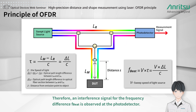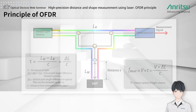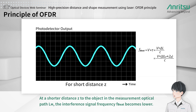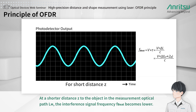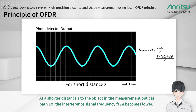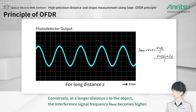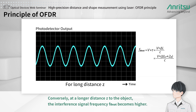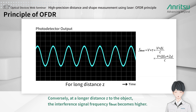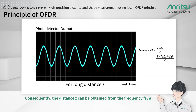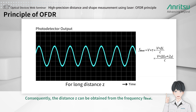Therefore, an interference signal for the frequency difference f-beat is observed at the photodetector. At a shorter distance Z to the object in the measurement optical path LM, the interference signal frequency f-beat becomes lower. Consequently, the distance Z can be obtained from the frequency f-beat.